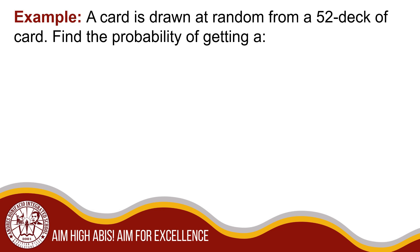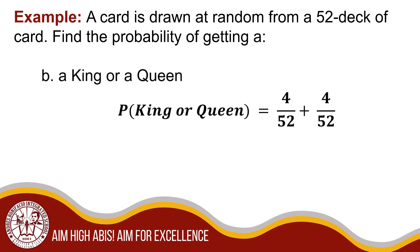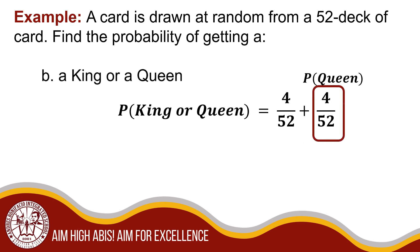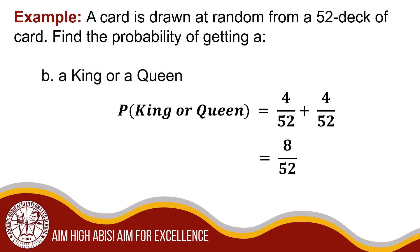A card is drawn at random from a 52-card deck. Find the probability of getting a king or a queen. I add the probabilities of each event together. The probability of drawing a king is 4 out of 52, and the probability of drawing a queen is 4 out of 52. Their sum is 8 over 52, or in lowest terms, 2 out of 13.